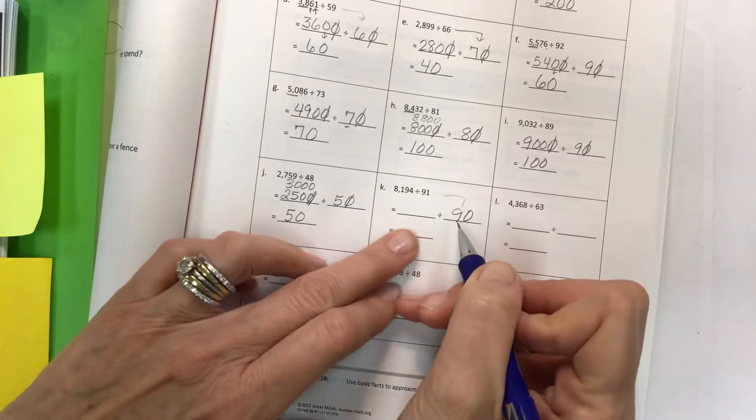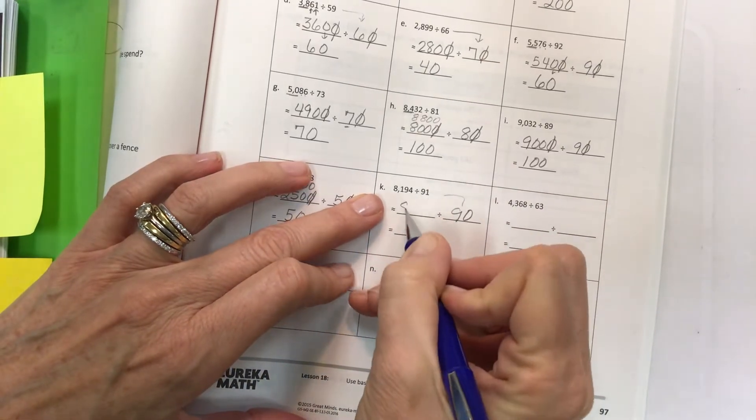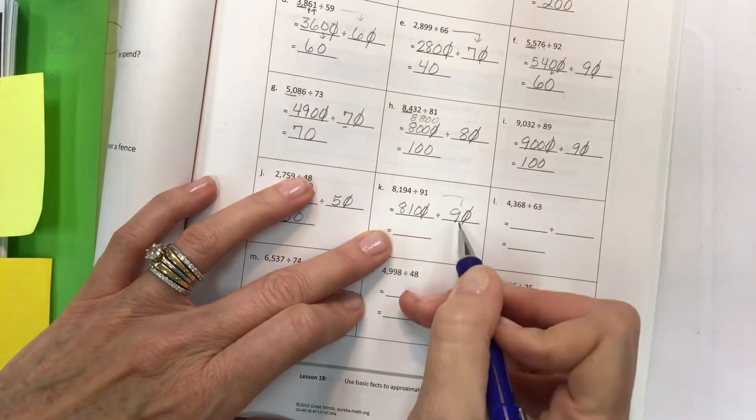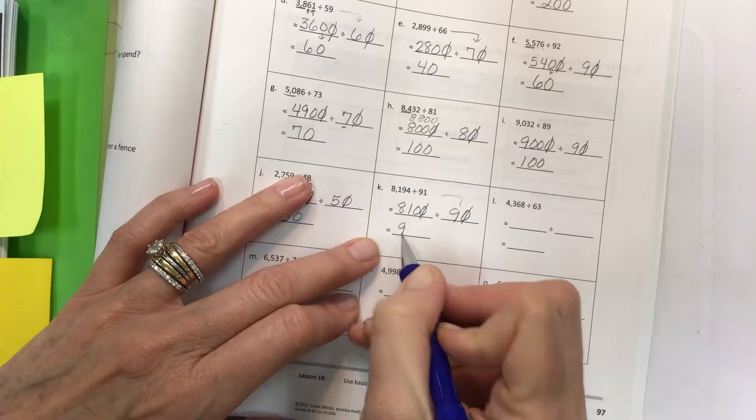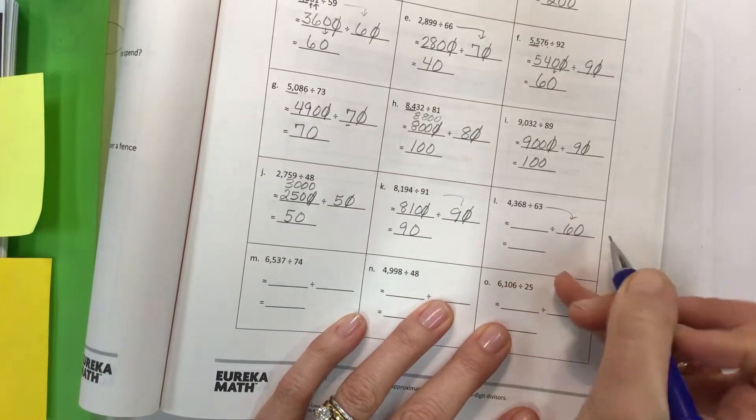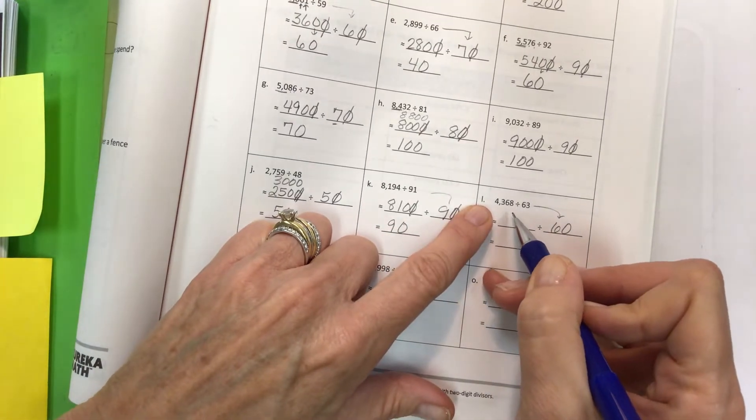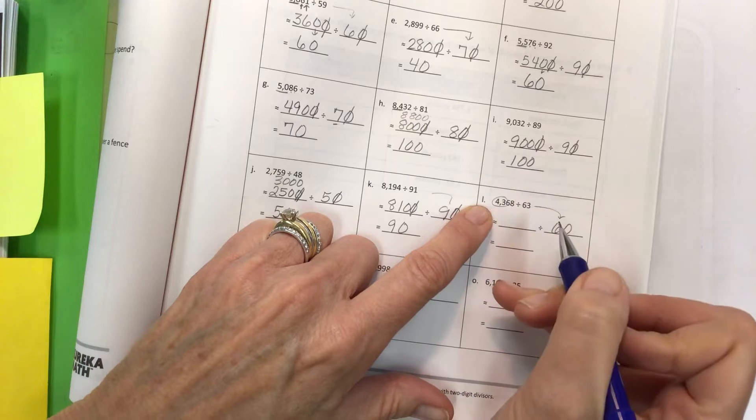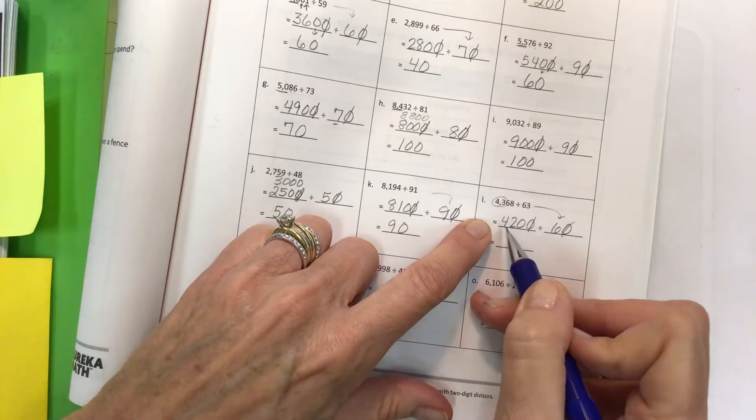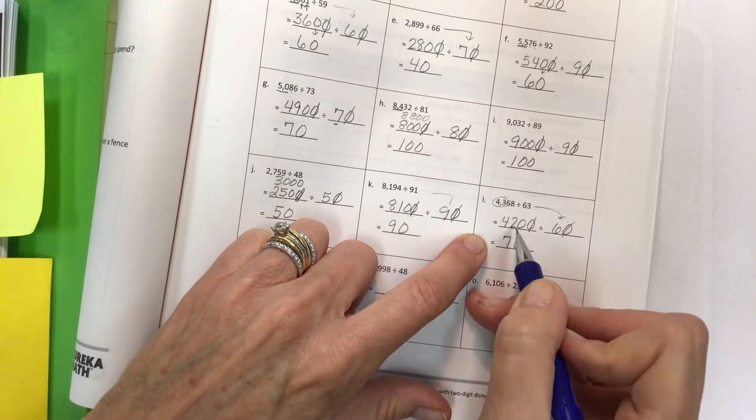Moving right along - round the divisor first. A multiple close to a multiple of 9 close to 81. Gee, this is not hard. Know your facts and they're so easy. 81 divided by 9 is 9, bring the zero down. Round the divisor first to 60. I need a multiple of 6 close to 4,368 or 43, so I'm going to use 42 because I know my multiples. Offset your zeros - 42 divided by 6 is what? 7. Bring down the zero.